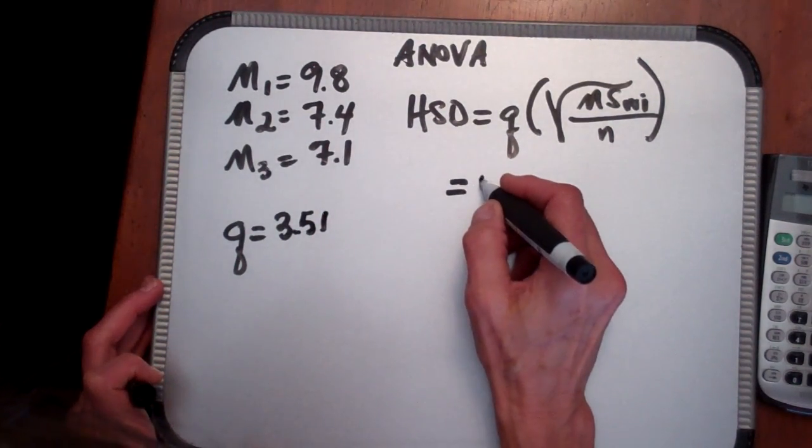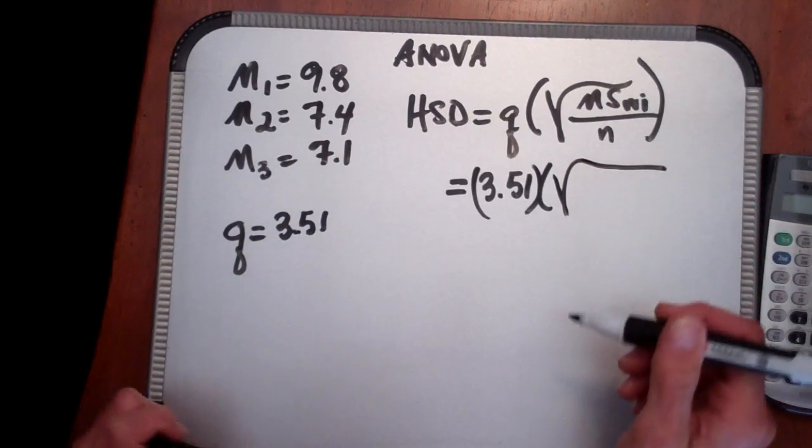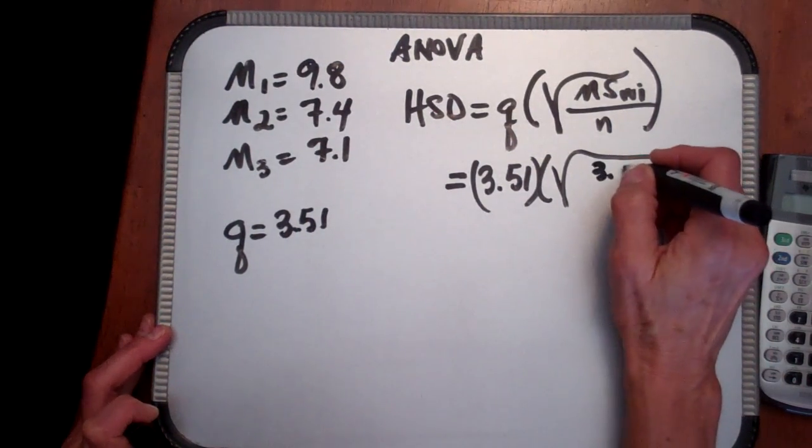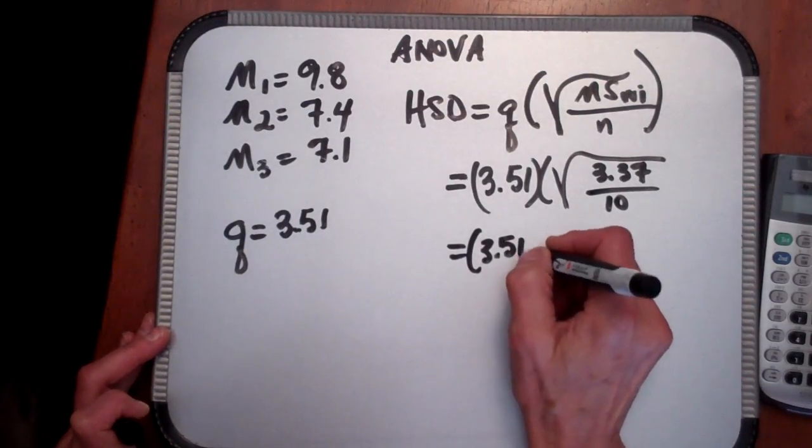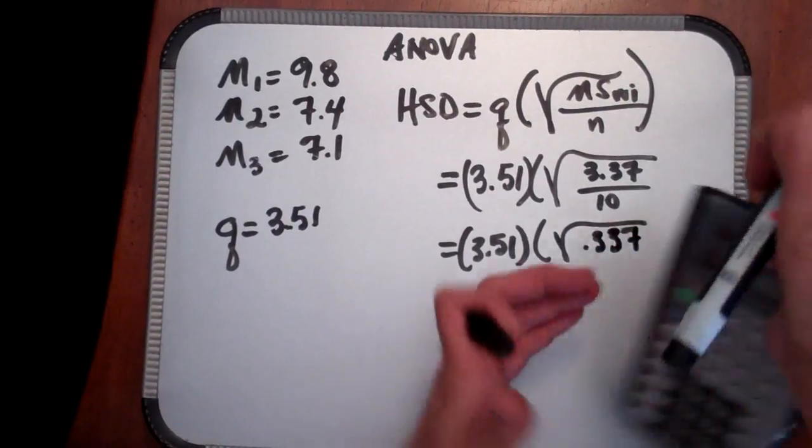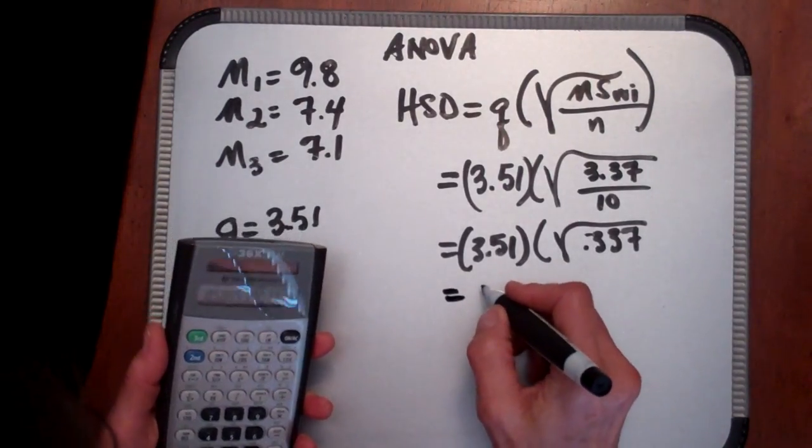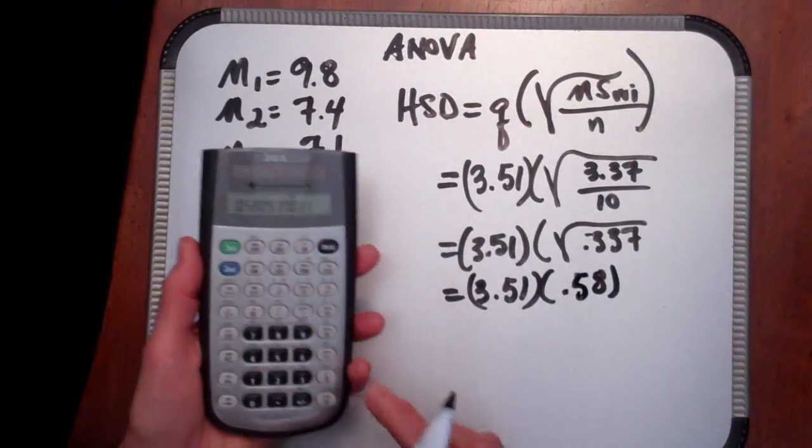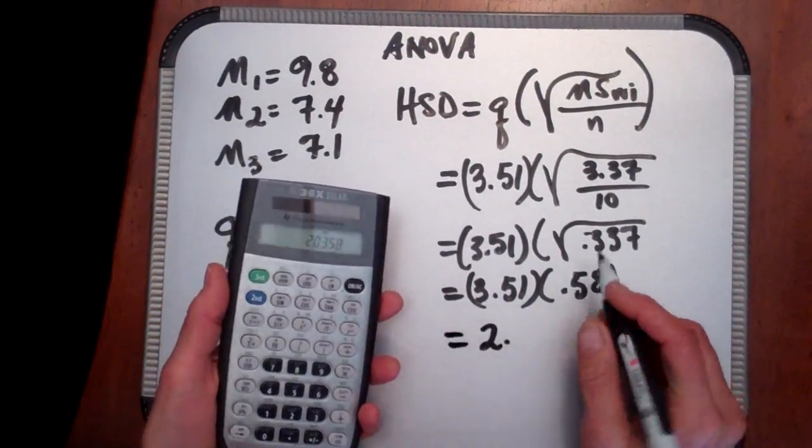So the Q value that we'll use for this is 3.51. And so now we're going to take 3.51 Q times the square root of the mean square error within, which for this example was 3.37 divided by 10. And of course it's the square root of 0.337. And if we just use our calculator here, take the square root of that, it's 0.58, so we have 3.51 times 0.58.